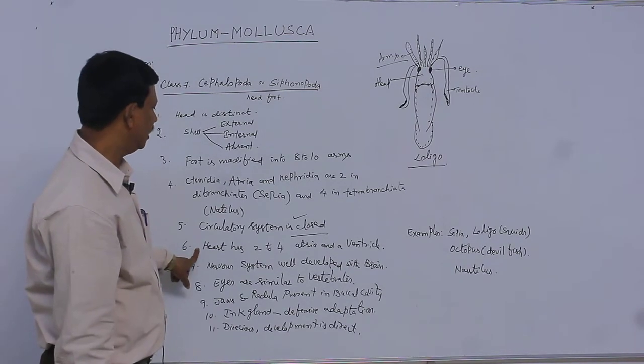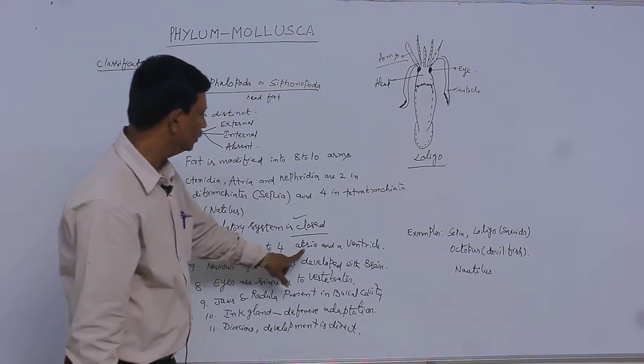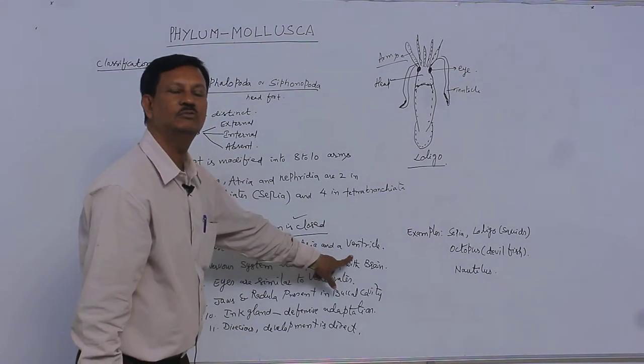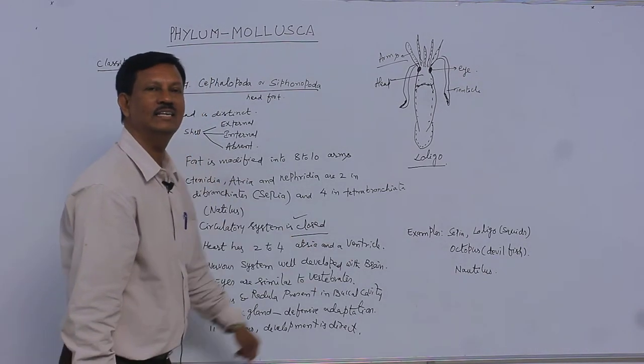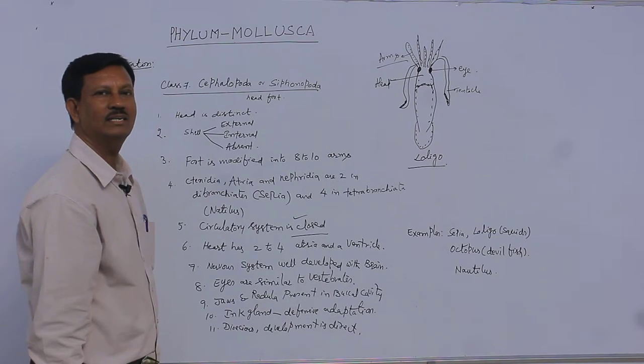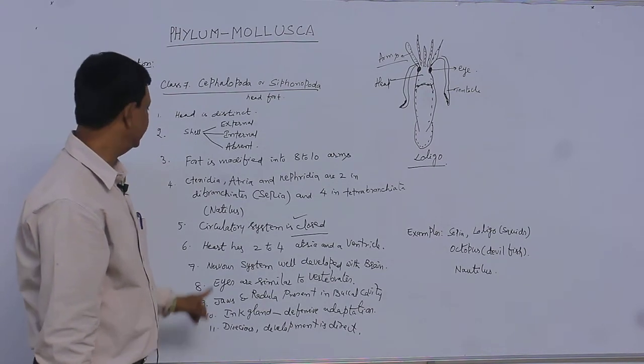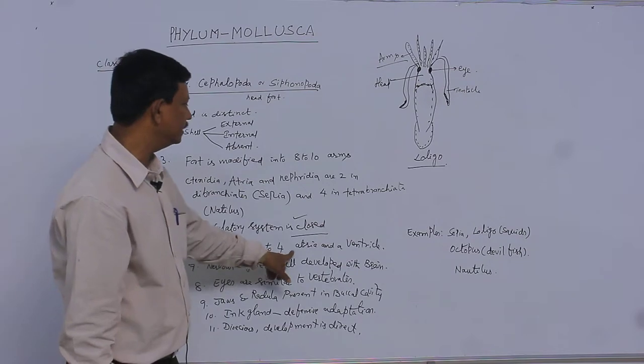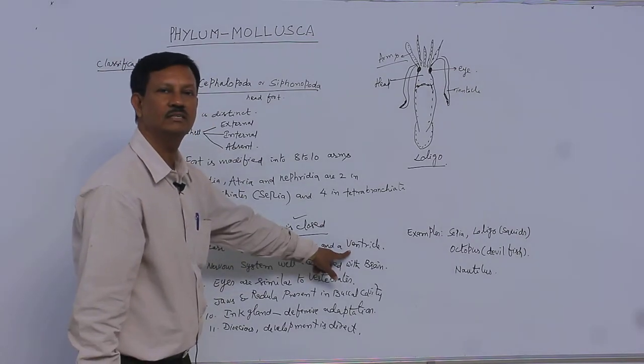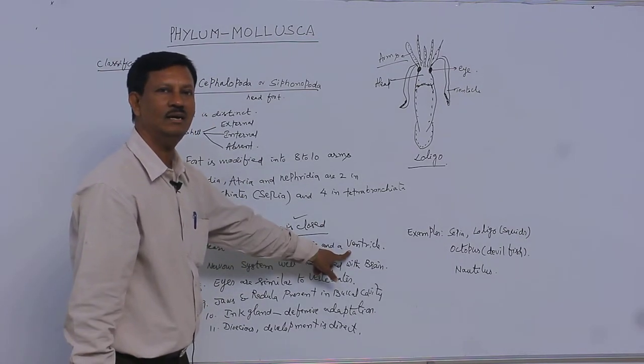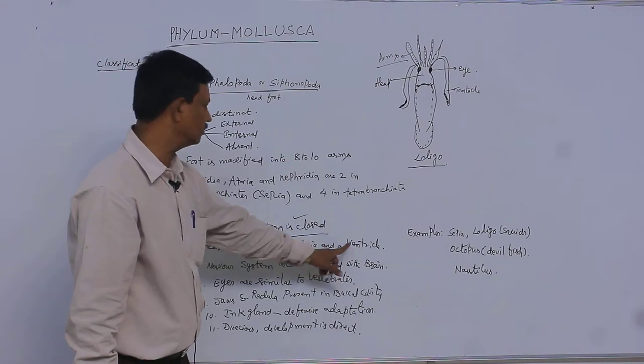The heart has 2 to 4 atria and is situated on the ventral side. Generally in invertebrates, the heart is present on the dorsal side—for example, you can take the cockroach. But here, the heart has 2 to 4 atria and it is ventral in position. A ventral heart is present in the vertebrates. This is also an advanced character.